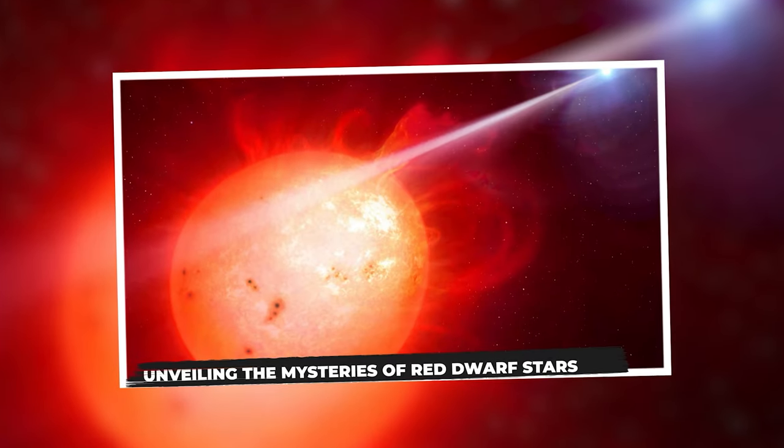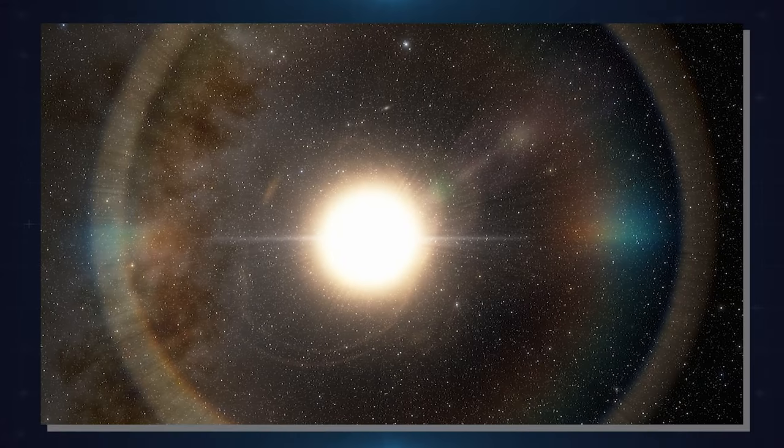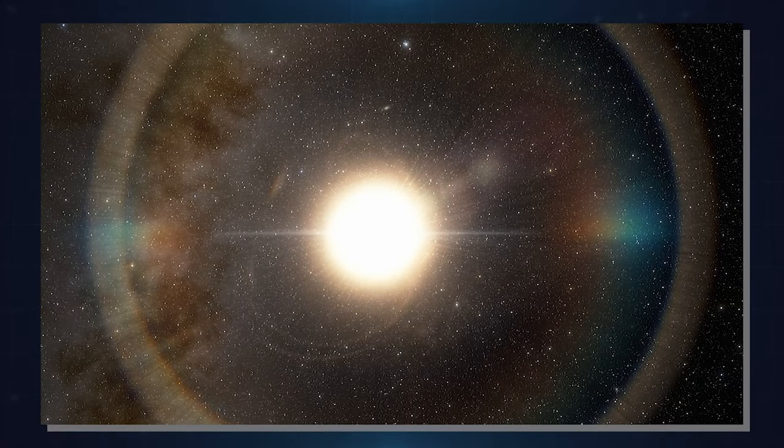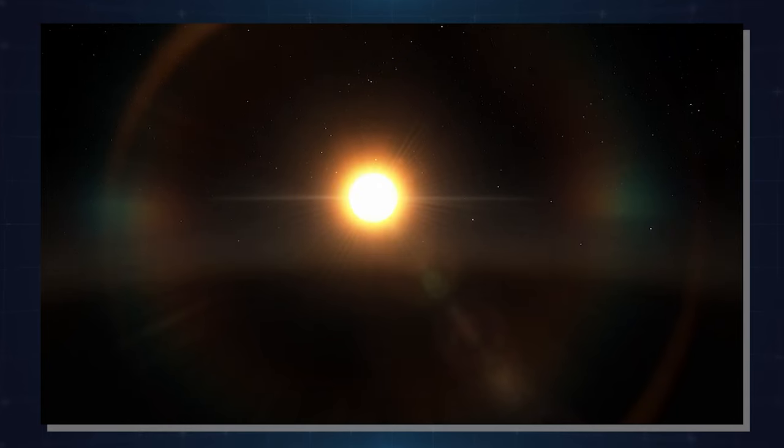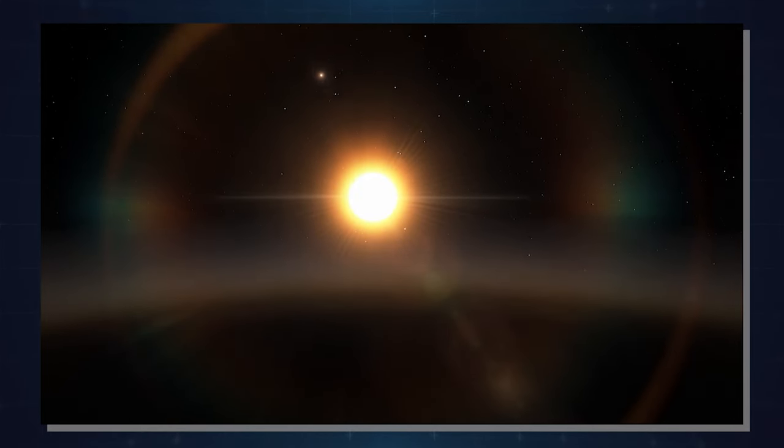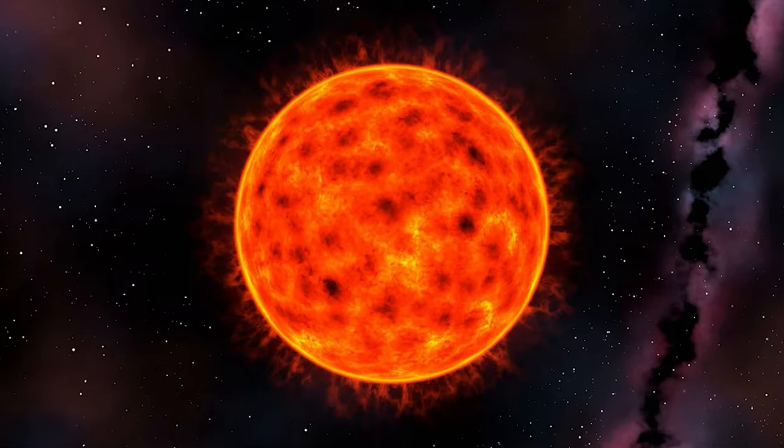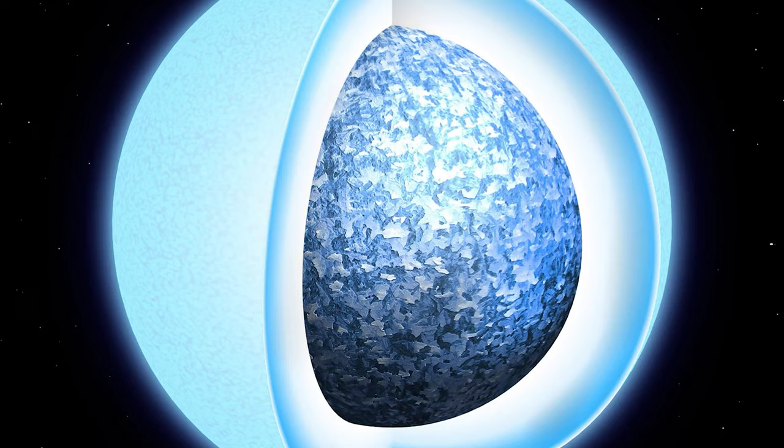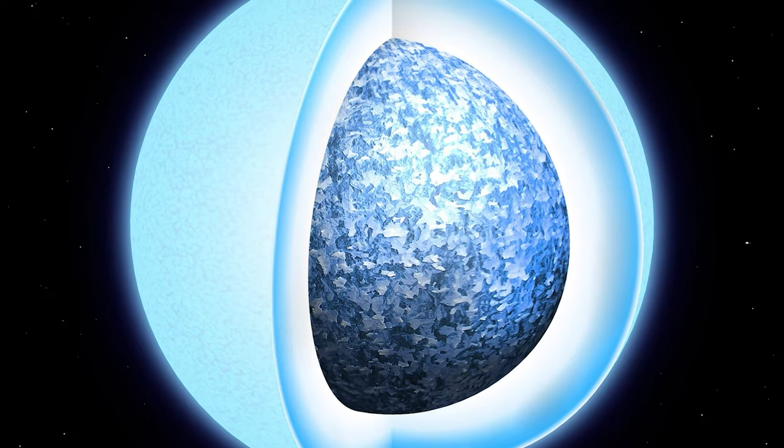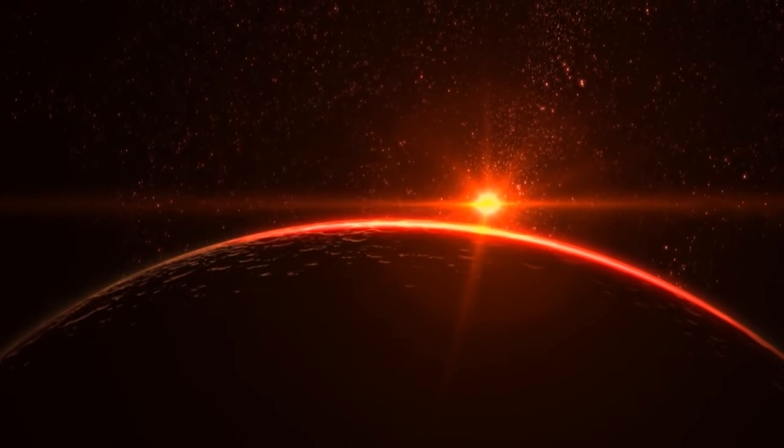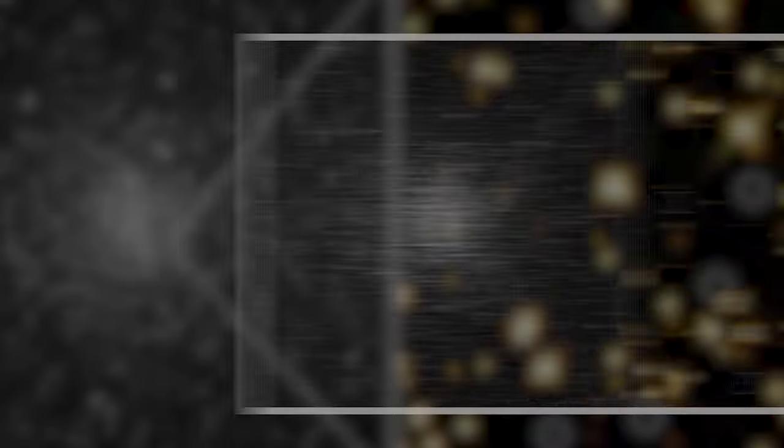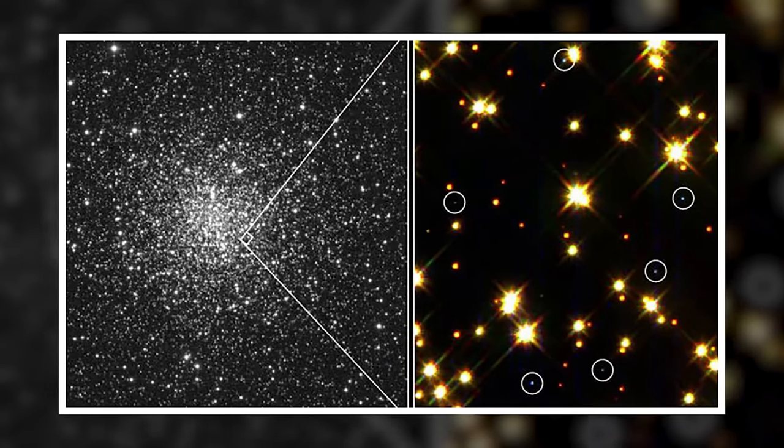Unveiling the mysteries of red dwarf stars. Dwarf stars are a special group of stars that have either average or low levels of brightness, mass, and size. Within this group, there are different types of dwarf stars, each with its characteristics. Some of these types include white dwarfs, red dwarfs, and main-sequence stars, like our Sun, which are also considered dwarf stars.